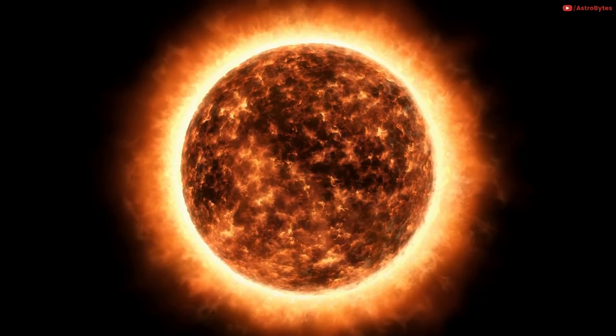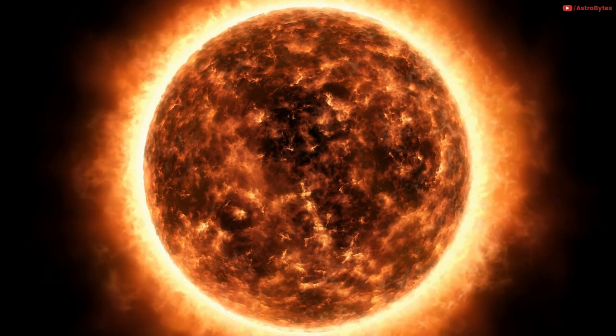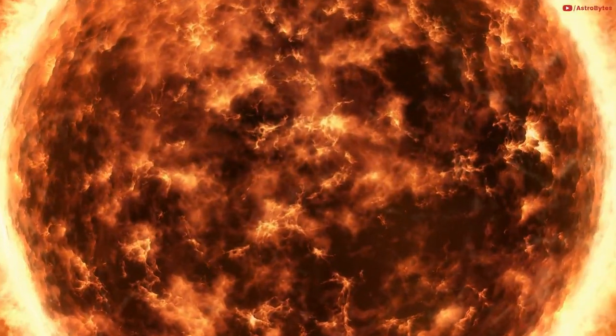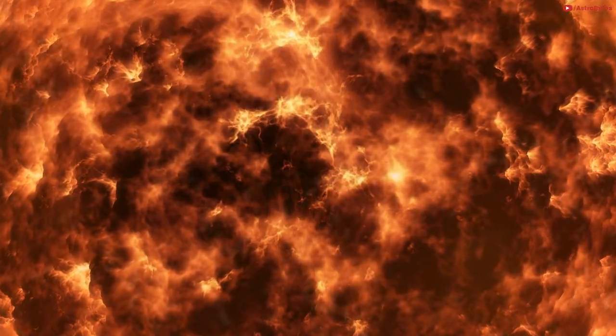Our sun is thought to become a red giant star in about 5 billion years. Understanding Betelgeuse might also help us understand what the end of our sun would look like.